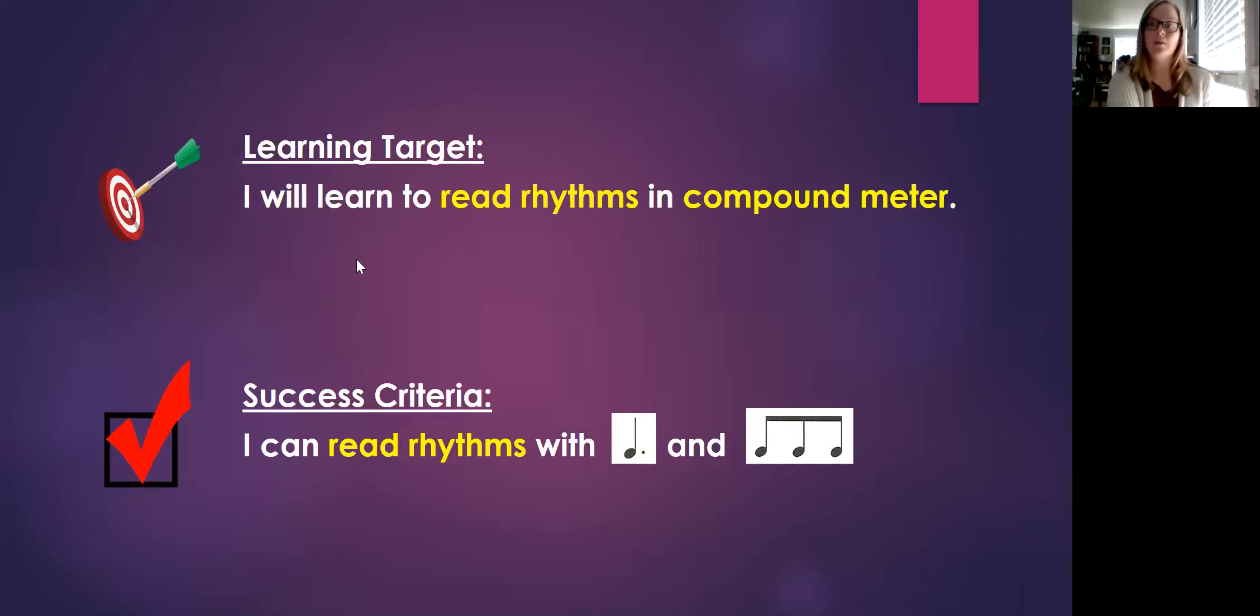Our learning target when we're learning these is I will learn to read rhythms in Compound Meter. So reading means we have to have our eyes on the screen, we have to be looking at what the rhythms are. Our success criteria: I can read rhythms with Do and Do-Da-D.